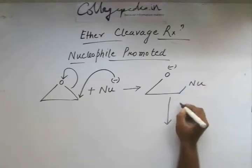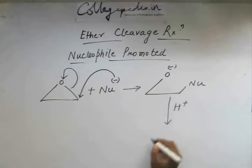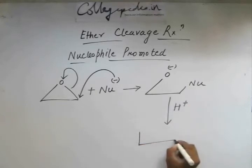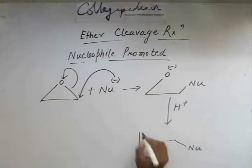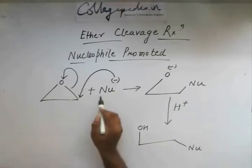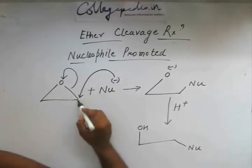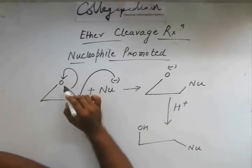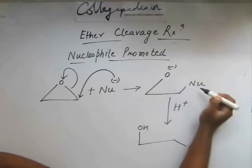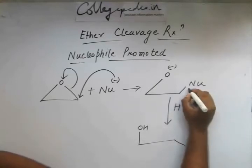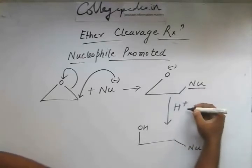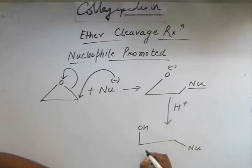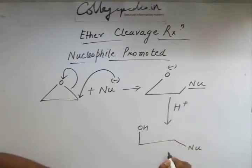When H+ is subsequently added, we are left with OH. So the nucleophile attacks on the electrophilic carbon center, this bond breaks, oxygen gets the electrons of the bond and thus acquires a negative charge, the nucleophile is attached to this carbon, and when H+ is given to the reaction intermediate, we get this as the product.